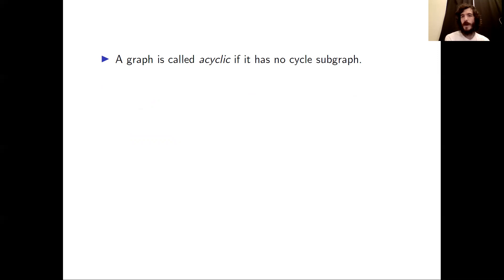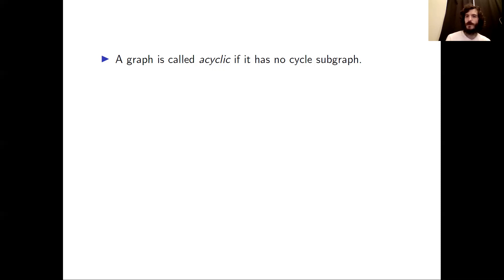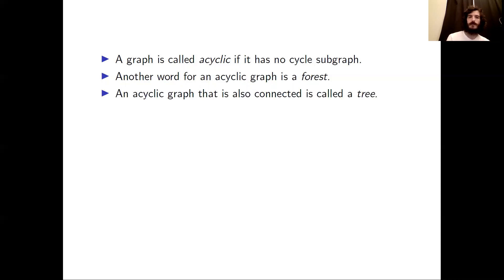Another special subgraph type is a cycle subgraph. We define a graph to be acyclic if it has no cycle subgraph. For example, the family of paths is a standard acyclic family, as is the empty graph. Another word for an acyclic graph is a forest. If we require an acyclic graph to also be connected, it is called a tree.